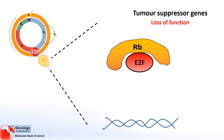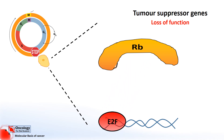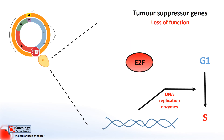If the retinoblastoma gene mutates, however, and starts producing a protein which cannot bind to E2F, it doesn't matter whether it's phosphorylated or not — it won't be able to function anyway, and the E2F transcription factor will be allowed to move the cell into S phase.